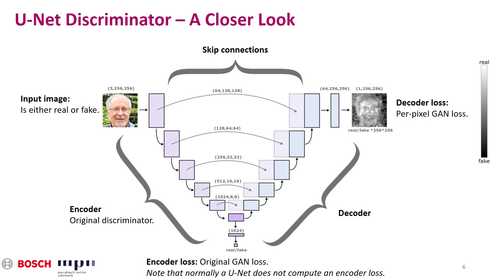Then we average the loss over all pixels and add them to the encoder loss. In our experiments, we choose the non-saturating GAN loss. Now the question arises: do the encoder and decoder agree or disagree when they predict the probability of an image being real or fake?